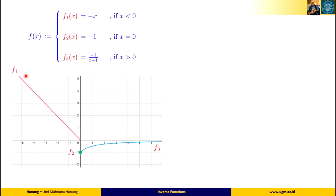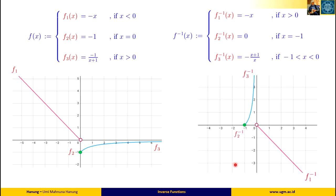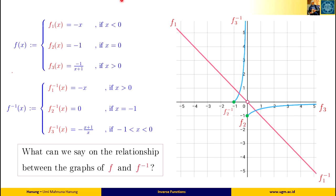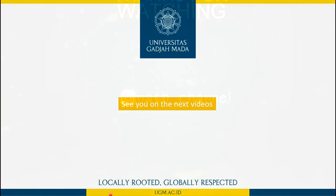Previously we obtained the graph of function f. Now after having the formula of f inverse, we can also plot the graph of f inverse. If the graphs of f and f inverse are plotted together on the same Cartesian coordinate system, we can observe their relationship: the graph of f inverse is obtained by reflecting the graph of f about the line y equals x. So in fact, we can use the graph of function f to plot the graph of f inverse directly, without knowing the formula of f inverse first. See you in the next video. Wassalamualaikum warahmatullahi wabarakatuh.